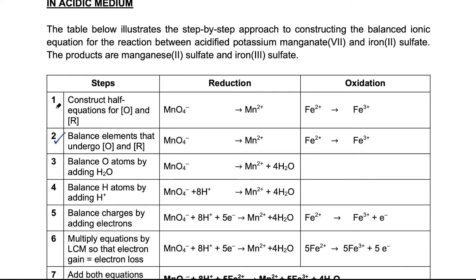Step 3: we balance oxygen atoms by adding water molecules. On the left I have four oxygen, so I must add four water molecules to balance the oxygen on the right side. I leave the oxidation half equation blank because there are no oxygen atoms to balance. Step 4: we add in hydrogen atoms to balance the H.